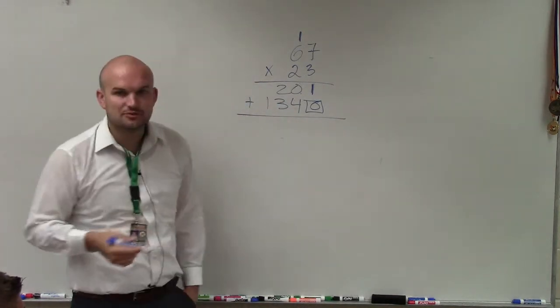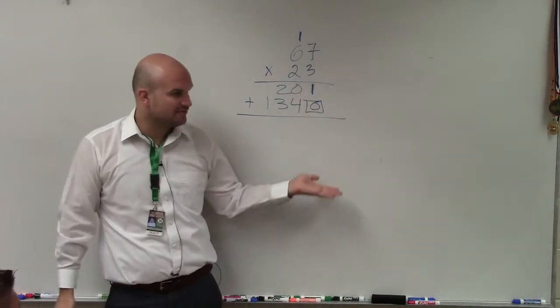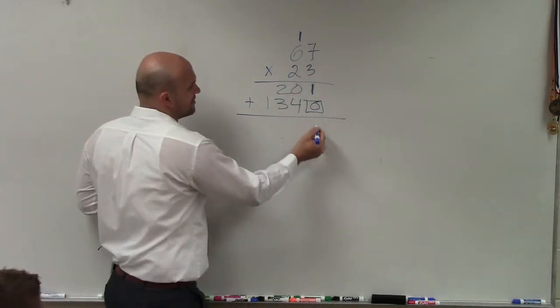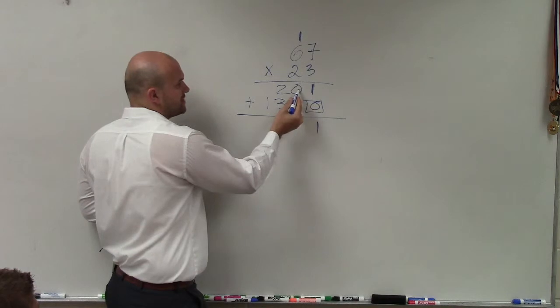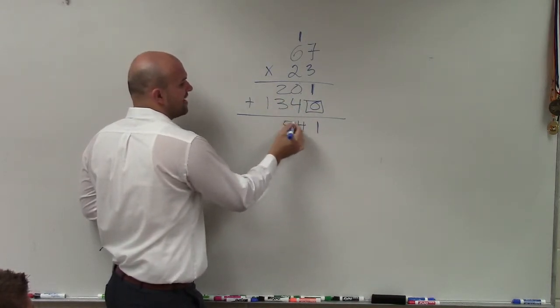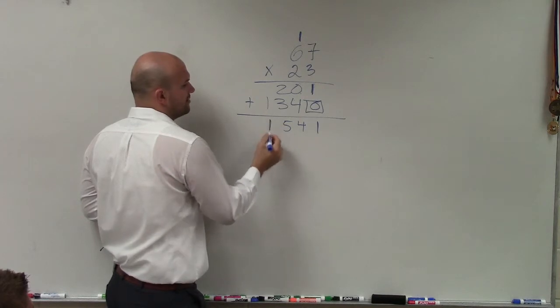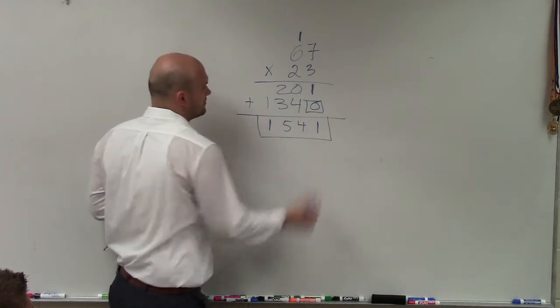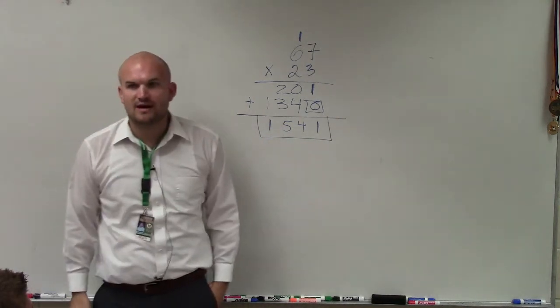So now, I take these two rows, and then I just add them up vertically. 1 plus 0 is 1. 0 plus 4 is 4. 2 plus 3 is 5. And 1 can bring down there. So then, that would be my final answer.